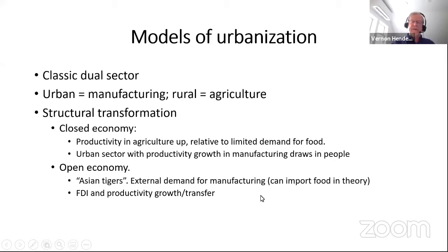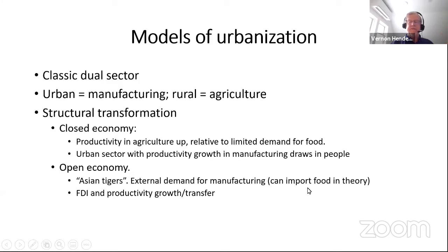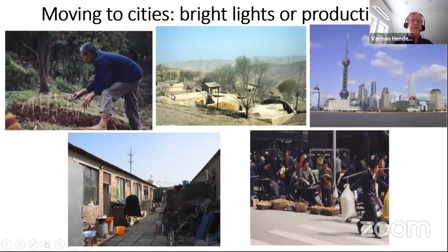The modern version is an open economy with the Asian tigers. You have external demand for manufacturing — think of China opening up in the 1980s with cheaper labor and huge demand for manufacturing products, drawing people into cities. There's FDI and some technology transfer. In China you also have improvements in growing food, but nowadays you could import your food, so the agricultural revolution isn't as essential.